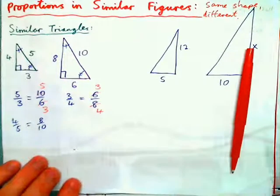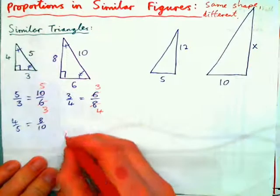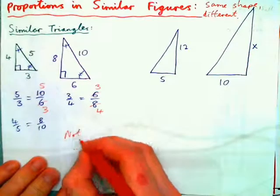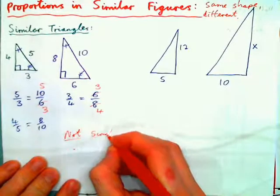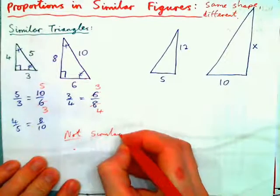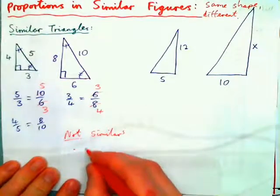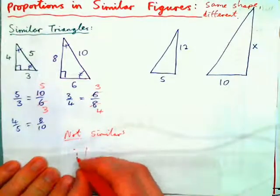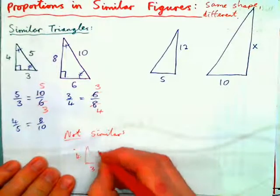So those are similar triangles. And of course, what does not similar mean? Not similar means different shapes. You could have a triangle that was 4, 3, 5...